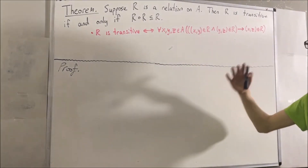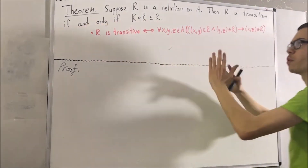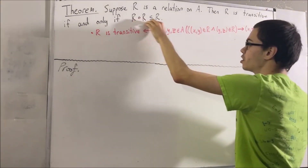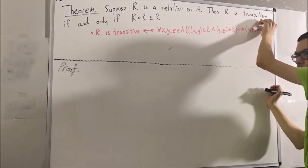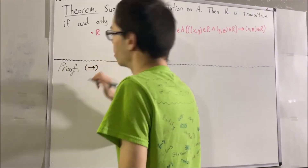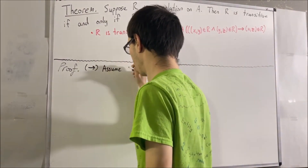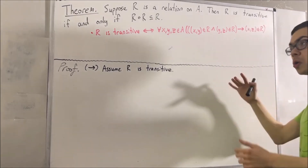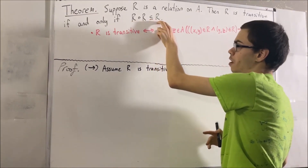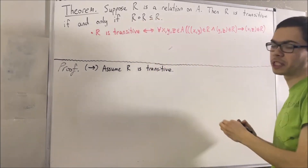So now let's begin the proof. Notice our theorem contains 'if and only if,' so really we're trying to prove that if R is transitive then R∘R ⊆ R, and if R∘R ⊆ R then R is transitive. Let's start by proving the first direction. To do so, assume R is transitive. Our whole goal now is to deduce that R compose R is a subset of R, and to do that, consider an arbitrary element of R compose R — I'll call it (P, Q).